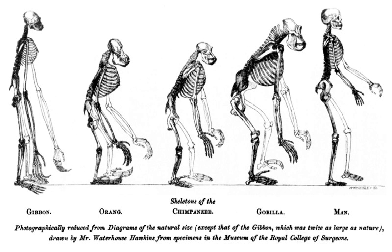The evolutionary history of life on Earth traces the processes by which living and fossil organisms evolved, from the earliest emergence of life to the present. Earth formed about 4.5 billion years ago and evidence suggests life emerged prior to 3.7 Ga. Approximately 1 trillion species currently live on Earth, of which only 1.75 to 1.8 million have been named and 1.6 million documented in a central database, representing less than 1% of the species that have ever lived on Earth.